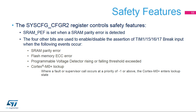These internal events are the power voltage detector event, the Cortex-M0+ lockup state, the SRAM parity error, and flash ECC error. The SYSCFG CFGR2 register also contains a flag bit that is set when an SRAM parity error is detected.